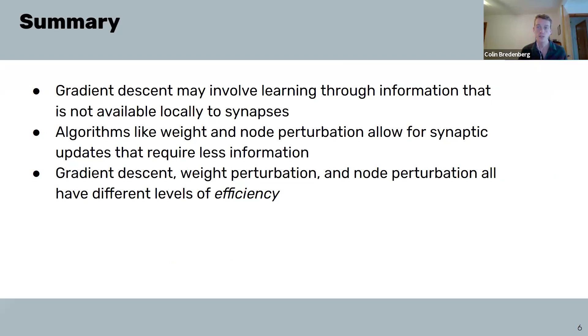To summarize, we've investigated two new learning algorithms, weight perturbation and node perturbation, which, through the use of perturbations to explore how synapses affect network performance, end up requiring less information for updating the parameters of individual synapses than ordinary gradient descent. For the rest of the tutorial, you will implement these algorithms and compare their relative performance and efficiency, both empirically and mathematically.